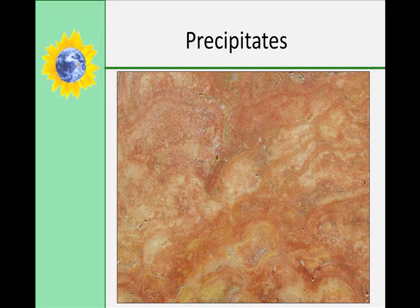Crystals can also precipitate out of solution without evaporation. Sometimes ions combine chemically to form insoluble compounds, which settle on the lake or seabed to form sedimentary rocks. Dolomite, which is calcium magnesium carbonate, forms in this way. Dolostone is a derivative of dolomite and forms from the crushed coral skeletons and shells of organisms that have been cemented.